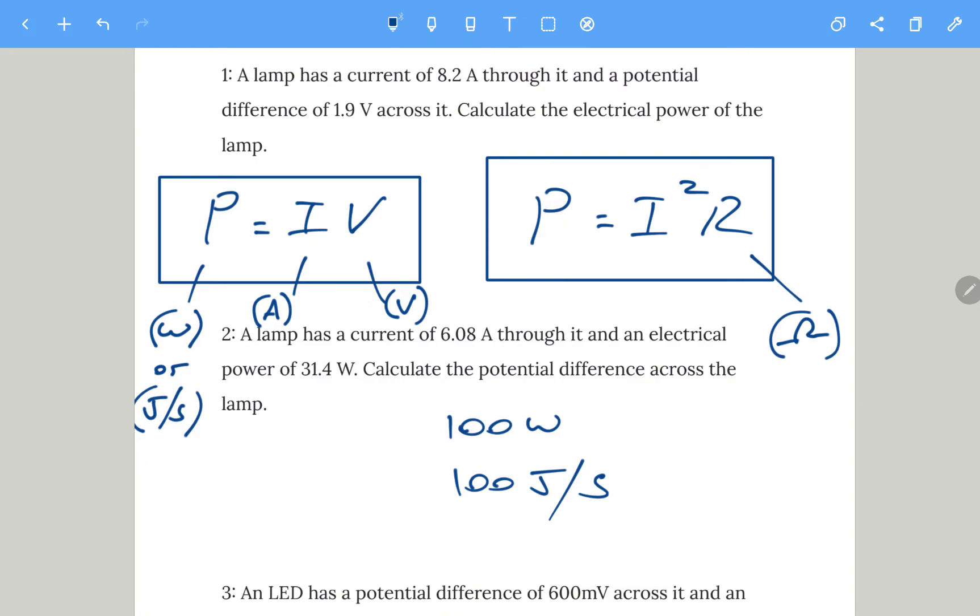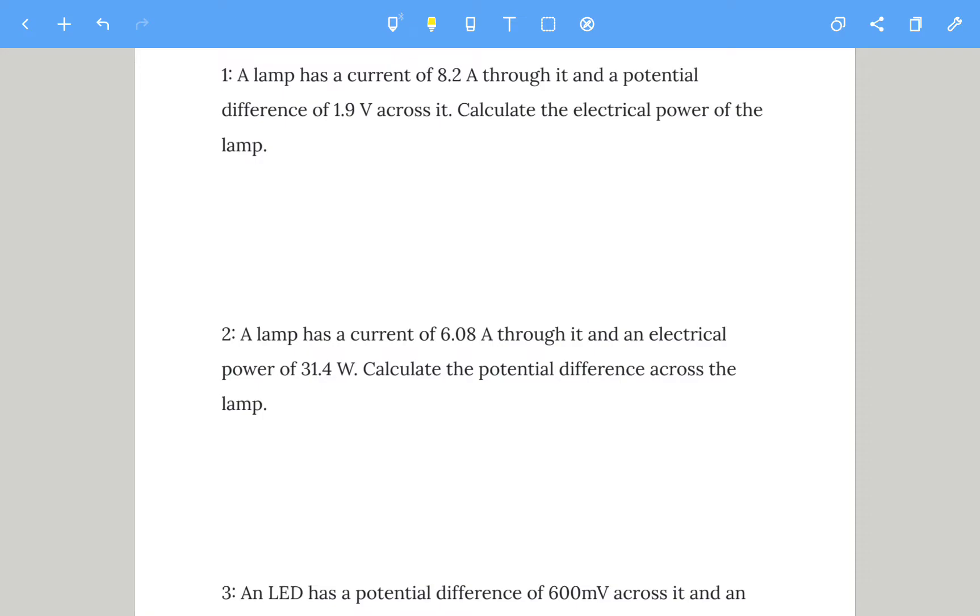Let's start with these first two questions and then I'll go through the answers. A lamp has a current of 8.2 amps running through it and a potential difference of 1.9 volts. Calculate the electrical power.